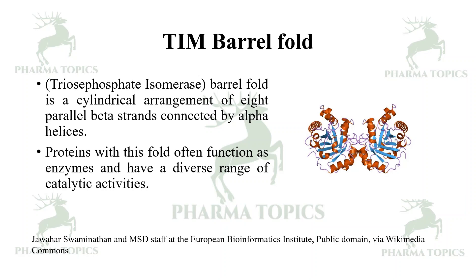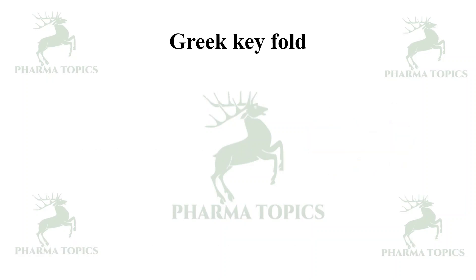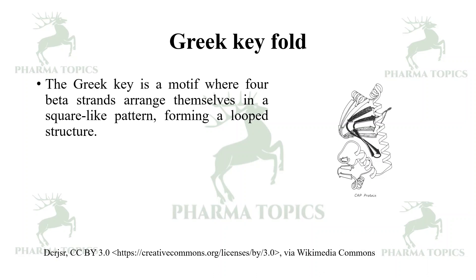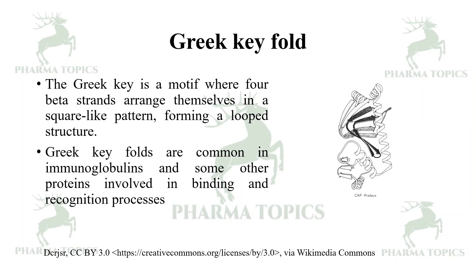The Greek key fold is a motif where four beta strands arrange themselves in a square pattern forming a looped structure. Greek key folds are common in immunoglobulins and some other proteins involved in binding and recognition processes related to immunity reactions.